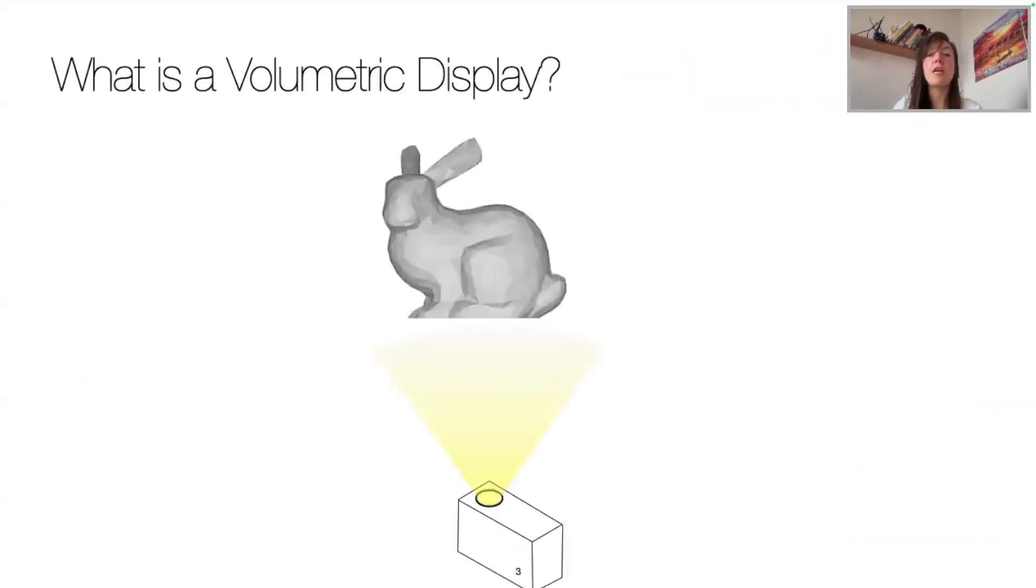So first thing first, what's a volumetric display? Well, it's a device that forms a visual representation of an object in three physical dimensions, in true 3D. It is autostereoscopic and provides a different view to each eye, thus creating true 3D content without forcing users to wear a headset or glasses.